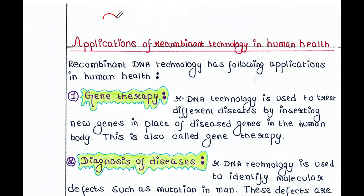Here we have a common concept: just take an expression vector — say it is a plasmid vector — and put your gene of interest here. This is your gene of interest, so it will produce your desired protein. You can then use that protein for your own purpose.